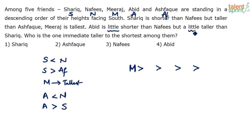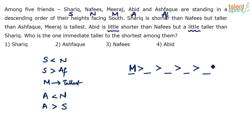Note the word 'little' has been used here — Abid is a little shorter than Nafis but a little taller than Sharik — so Abid is between Nafis and Sharik. We'll see if that is of any help as we go forward. The question asks: who is the one immediately taller than the shortest among them? There are five positions. The tallest is Miraj. We need to find who is second from the right — immediately taller than the shortest.